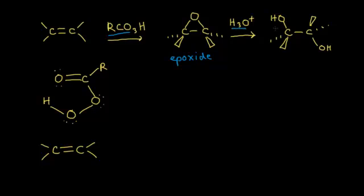What ends up happening is you get two OH groups that add on anti to each other across from your double bond. So the net result is you end up oxidizing your alkene. You can assign some oxidation numbers on an actual problem and find out that this is an oxidation reaction.